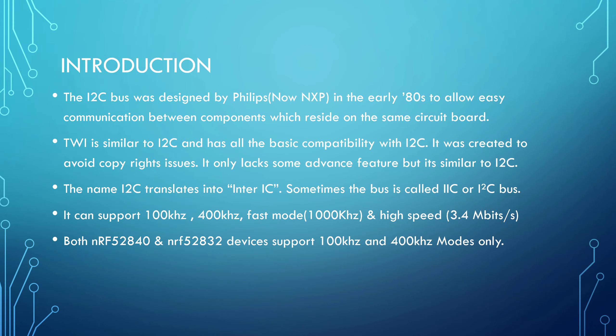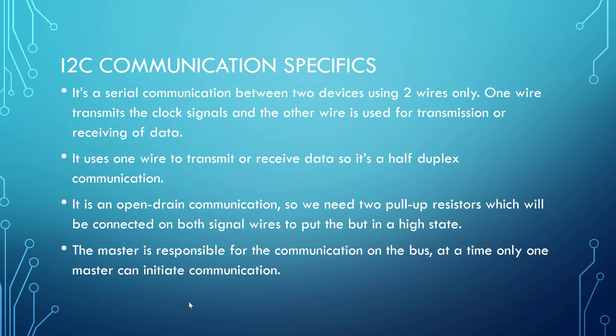I2C communication is a little different from serial communication we previously used, which is called UART. In UART communication we have a parity bit, data bits, and we set the baud rate to communicate. In I2C we have two wires: one wire is used for clock transmission and the second wire is used for data. This communication is half duplex instead of full duplex as seen in UART.